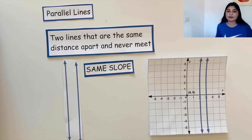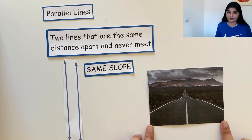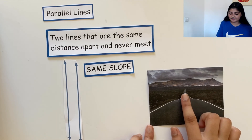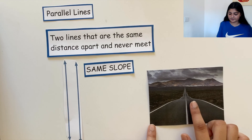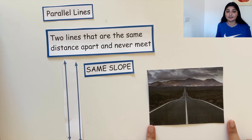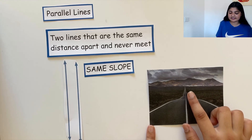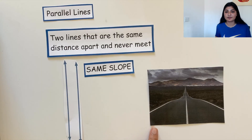Where can we see an example of parallel lines? This is a lonely road — and believe me, you wouldn't want to be here alone. As we can see, there are two white lines on either side of the road, here and here. These two lines are parallel lines, since they continue endlessly in the same direction and they are the same distance apart and will never cross each other. They also have the same slope. But what does it mean if they have the same slope? Find out in tomorrow's video.